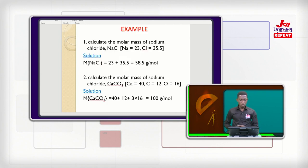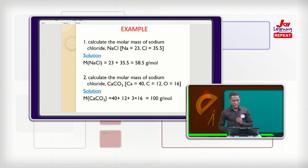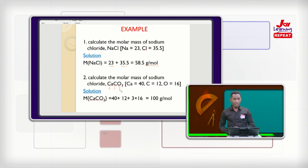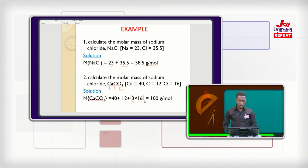So this is something you are supposed to know in calculating the molar mass. On your screen: calculate the molar mass of sodium chloride, NaCl. They give you the individual atomic masses. Your job is to pick them one after the other, add them, and write the unit gram per mole. For calcium carbonate, there are three different atoms, but oxygen is three times. So we have 40 for calcium, 12 for carbon, and 16 times 3 for oxygen. You get 100 gram per mole.